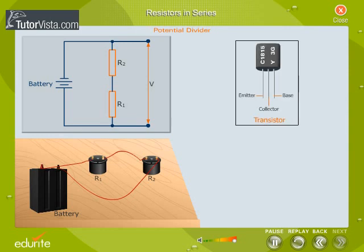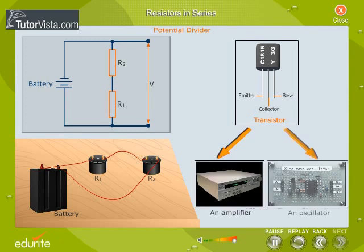For the normal working of a transistor as an amplifier or as an oscillator, we may require a voltage less than the voltage of the battery in the circuit. In such situations, we make use of this voltage divider circuit. Let us understand how the voltage is divided across the circuit with the help of mathematical equations.